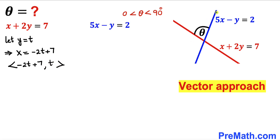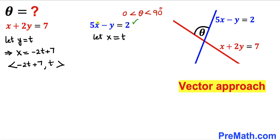We are going to work on this equation and this time we are going to assume that x takes some constant value t. So therefore let's assume x equal to some constant value t; then this equation is going to become, once we substitute x by t,